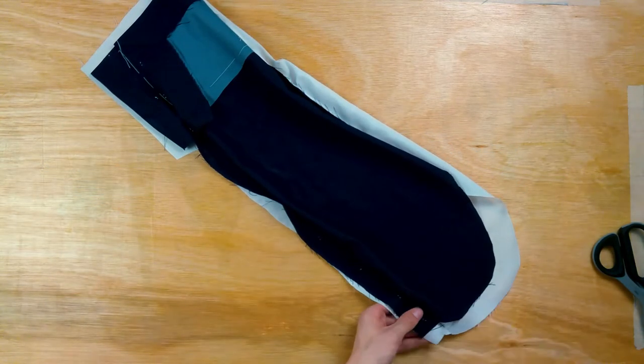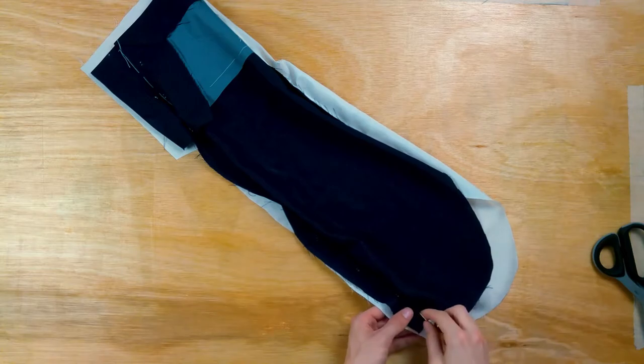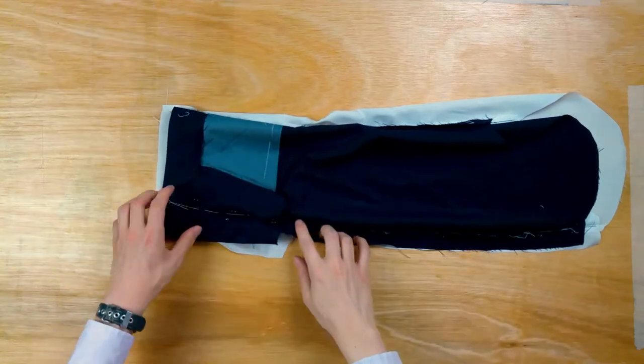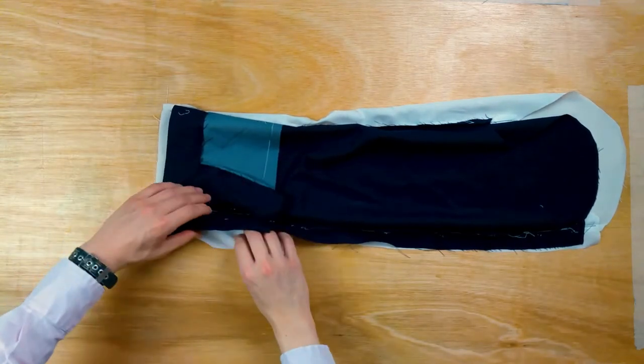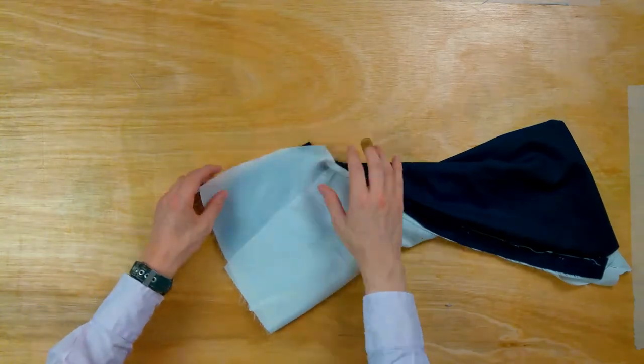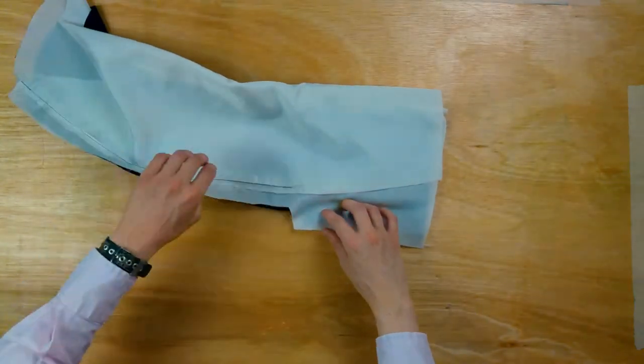Do the same for the hind arm seam allowances, except no pin, just stop a little above the vent. Fold the lining inlay of the undersleeve inwards, and baste it to the undersleeve inlay. Not all the way down though, as we'll need to turn the hem up.